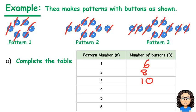And we've got some room here for pattern number 4, 5 and 6. So we need to now start thinking, well what is happening and how do I work out what the next numbers would be?